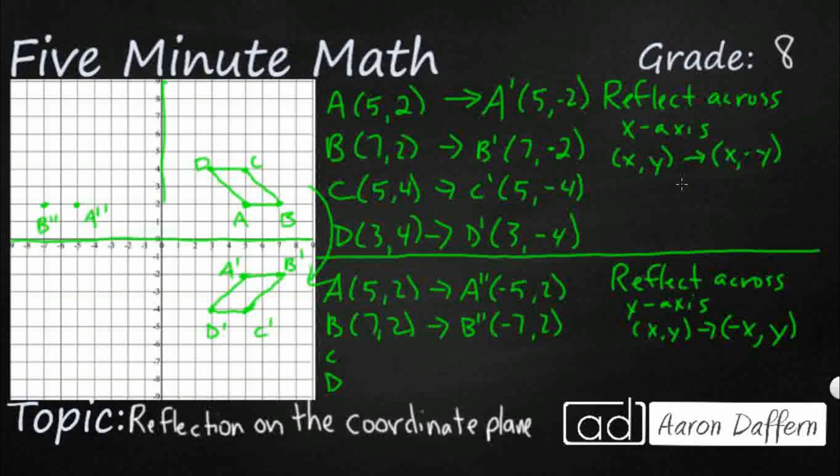And obviously this time we are reflecting across that y-axis. So C is 5,4. And that is going to become C double prime. That's negative 5. Still a positive 4 for the y. So let me see. We've got that negative 5, 4. That's C double prime.